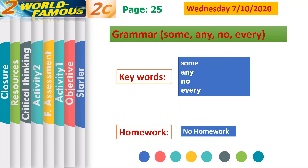Bismillah ar-Rahman ar-Rahim. As-salamu alaykum, Tullabi al-A'za, Tullabi al-Safi al-Thaman. Wednesday, October 7, 2020. Today's lesson is on page 25 in your student's book. Today's lesson has three parts: grammar, listening, and writing. First, we are going to work on grammar.